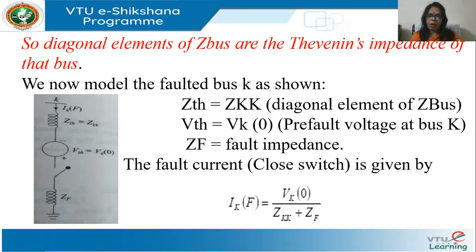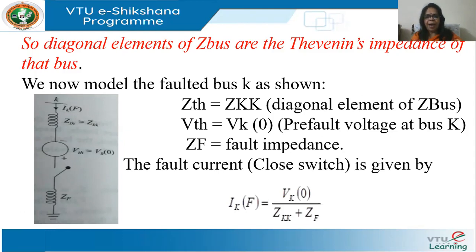I have calculated the short circuit current. You can do it at any bus, because K is just the bus number. Once you have the load flow voltages at all buses and Z_KK as the diagonal element, you can calculate the fault current for a short circuit at any bus. The second job is to calculate the change in bus voltages because of this fault.